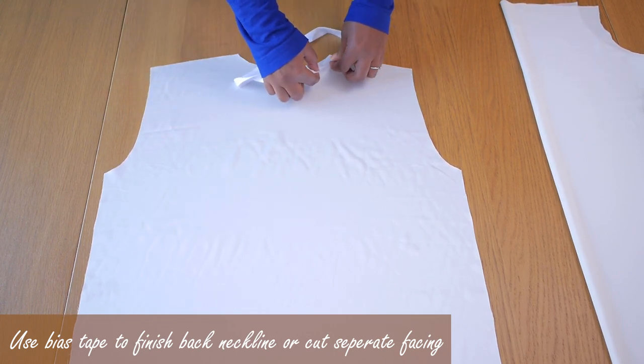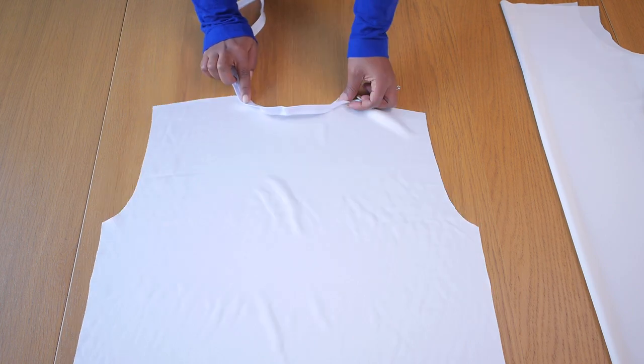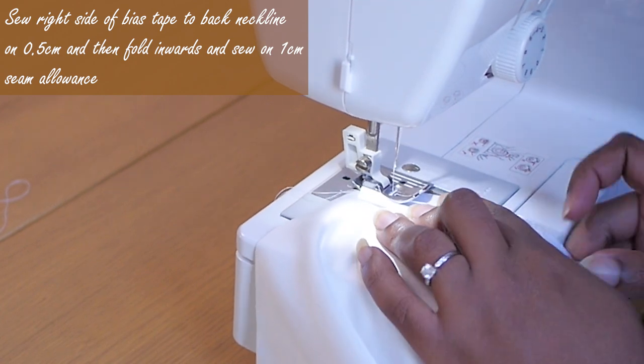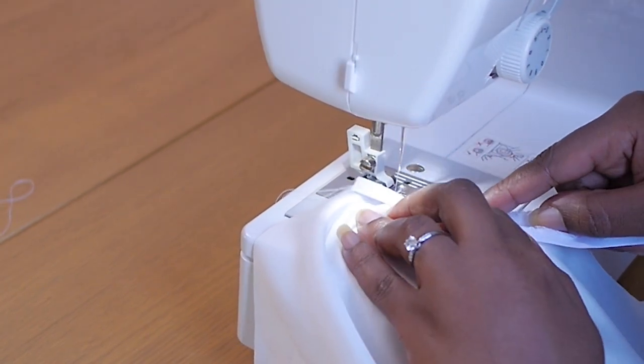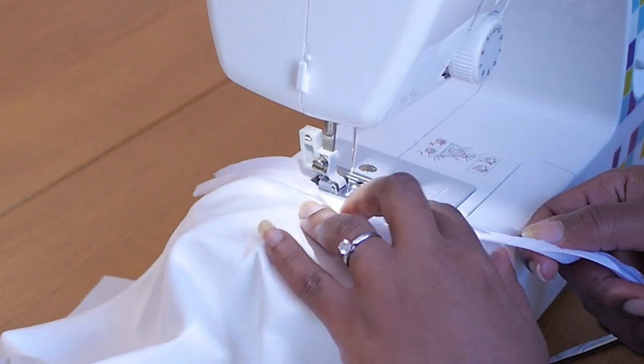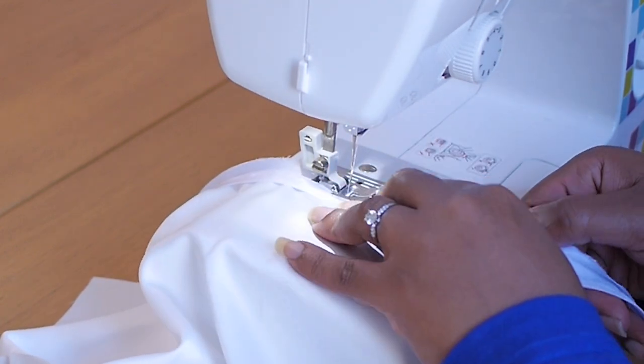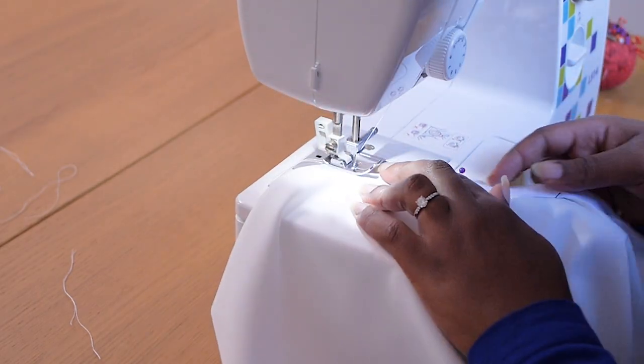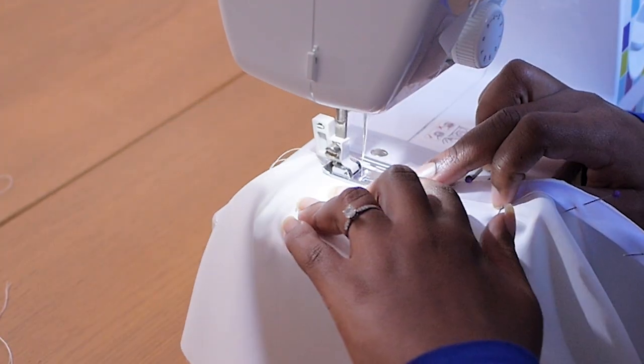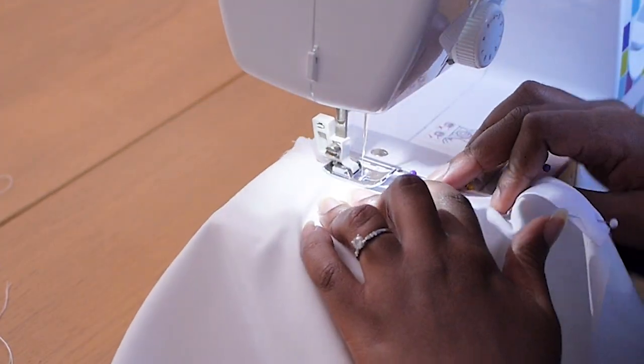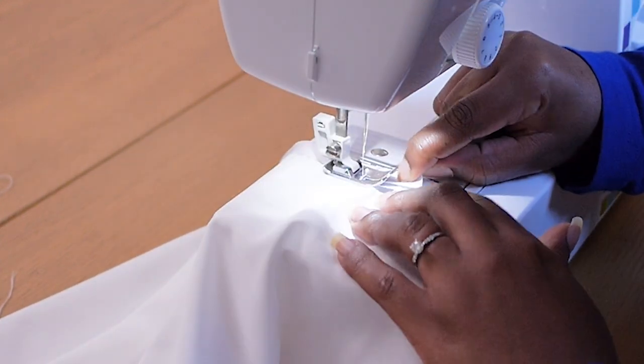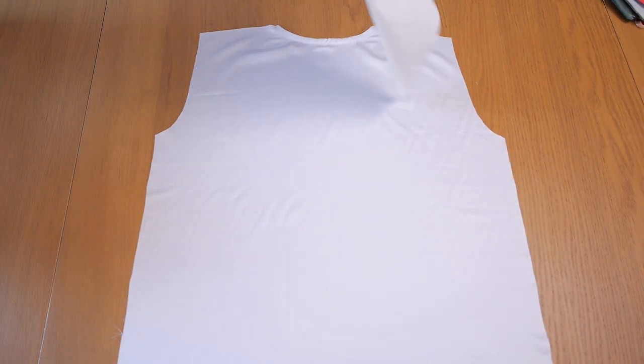So to finish your back, you can either use bias tape to finish the back neckline or you can cut a separate facing that has the same width as the front, whichever works for you. You can do, but for now I'm just using a white bias tape and I'm sewing it first like so, right edges together, sewing on 0.5 centimeter seam allowance. And then after doing that I'm going to come back in and fold the tape on the inside of the fabric and stitch together on a one centimeter seam allowance. So we have a nice finished neckline on the back of your blouse or of your dress. This is completely optional.